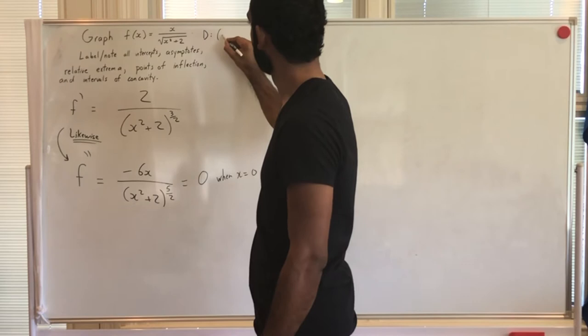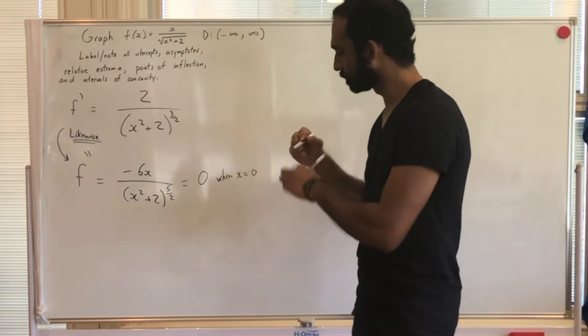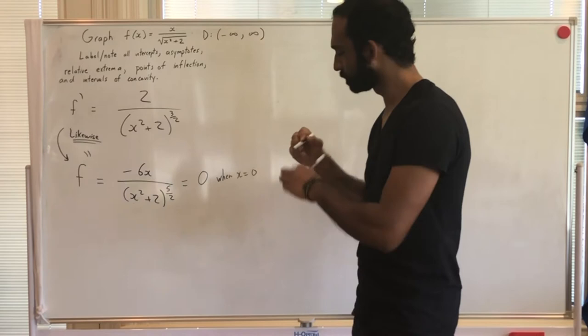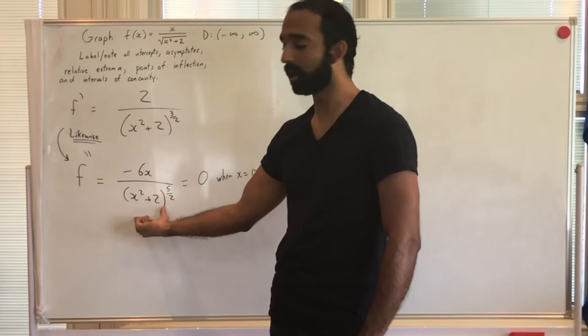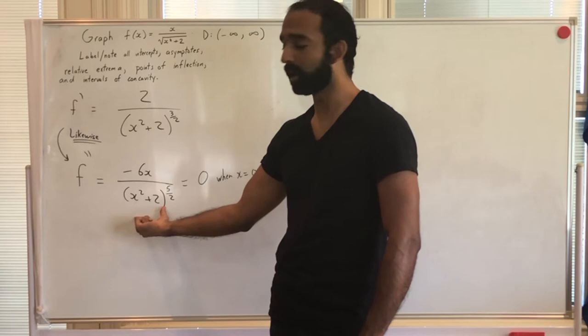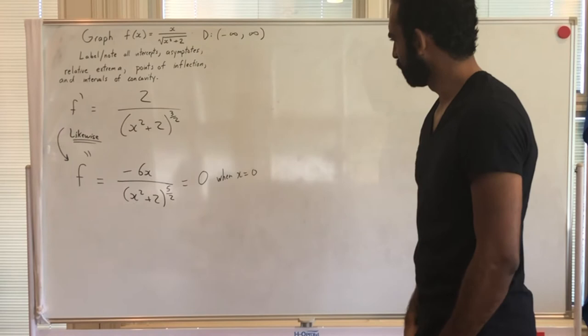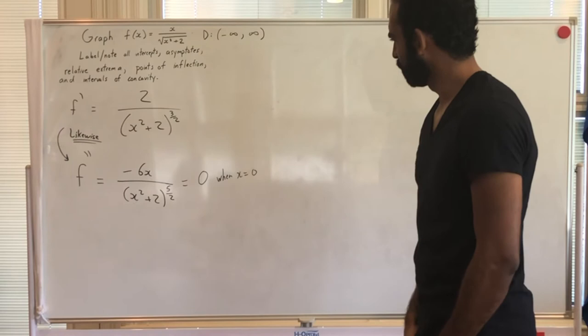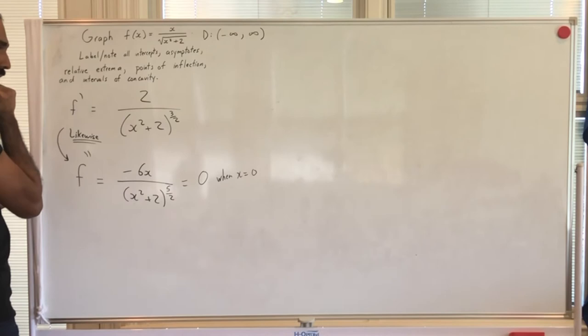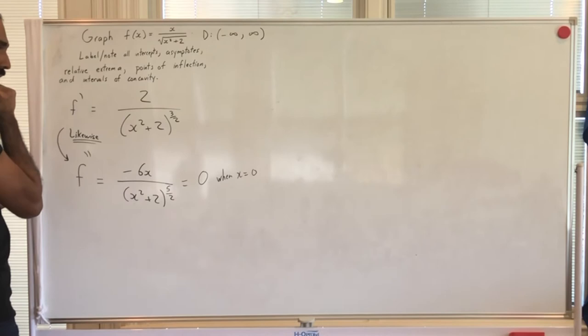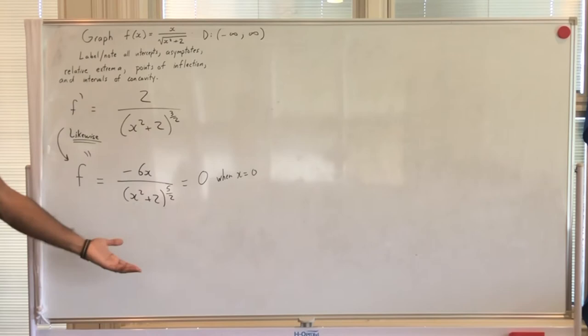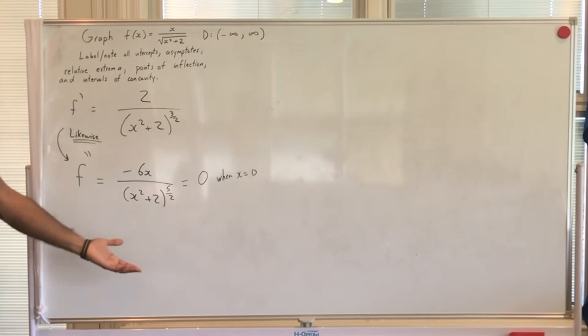The entire function has domain all real numbers. Is the second derivative ever undefined? No — x² + 2 is always positive, raising it to the fifth power keeps it positive, and square-rooting keeps it positive. So there is only one possible point of inflection.